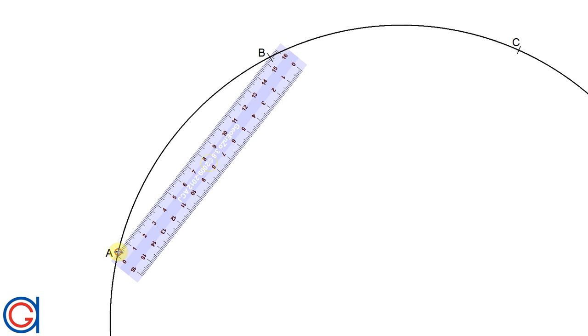So the first thing we mark three random points equidistant, more or less, on the arc as you can see here: A, B, and C. And the next step, with a ruler, we will join the points A to B and B to C.